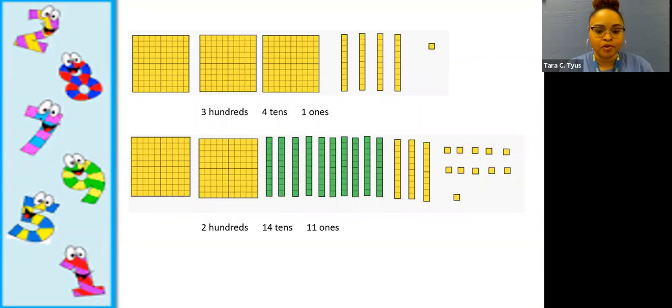Here is an example of how we represent numbers. The first one shows representing in the basic, the most efficient way that we know how with three hundreds, four tens and one one. This shows the number 341. These are what we call base 10 blocks.